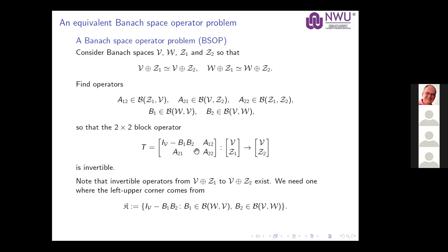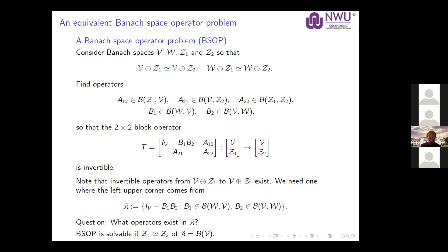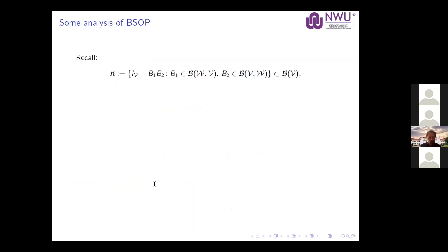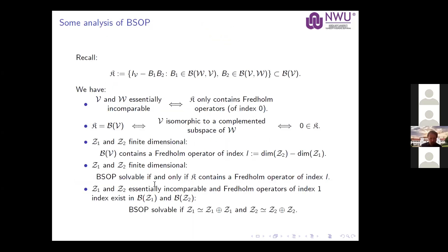The difficulty is that the conditions tell you invertible operators exist between the two spaces, but you must get them in this specific block form. Some easy observations: it's solvable if Z_1 and Z_2 are isomorphic — just take an isomorphism and set the other entries to zero. Another easy case is when you get all possible operators on ρ. But that doesn't always happen.